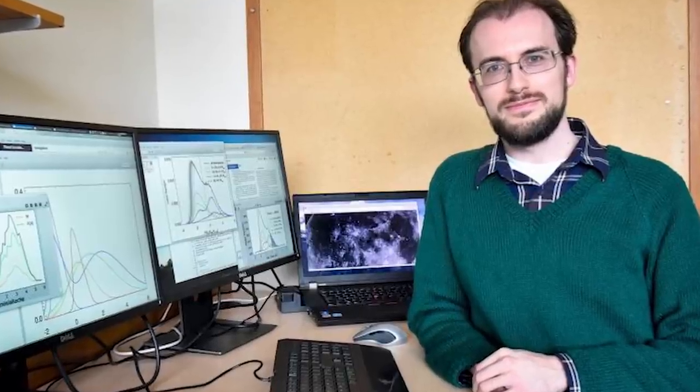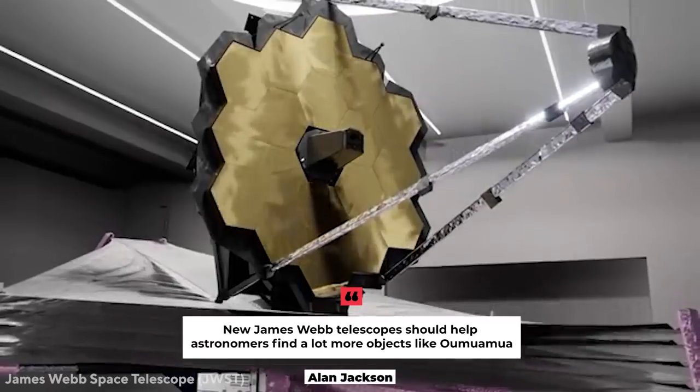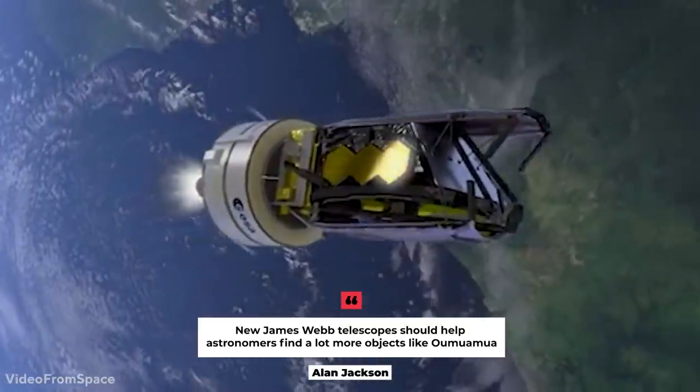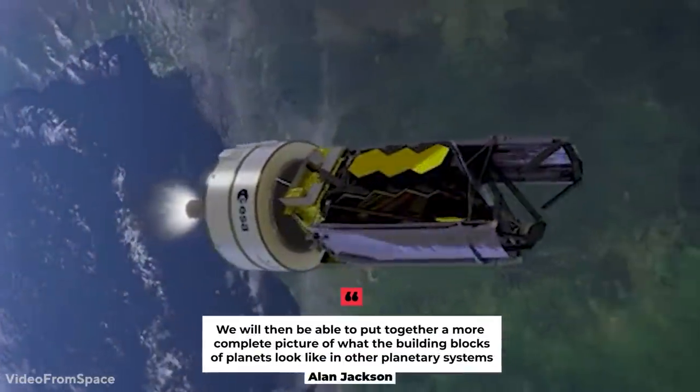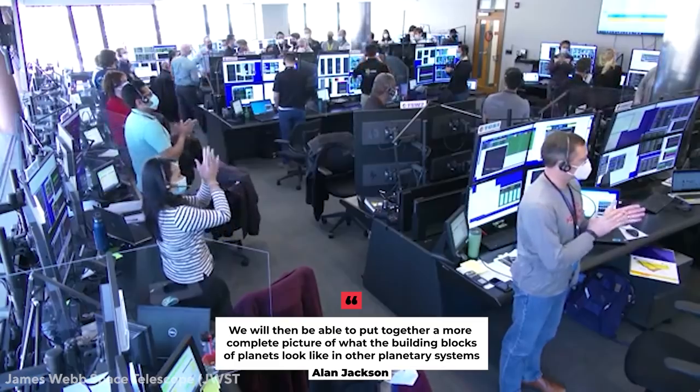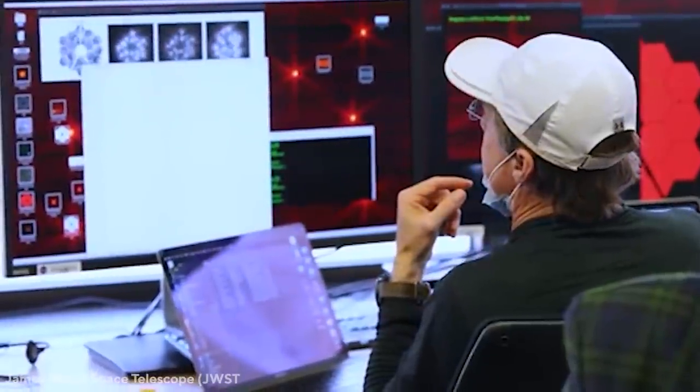Jackson conducted previous research on Oumuamua, but was not involved in the new study. Whatever its precise identity, Oumuamua might be just the first of many such interstellar visitors we'll encounter. Jackson said new James Webb telescopes should help astronomers find a lot more objects like Oumuamua, and we will then be able to put together a more complete picture of what the building blocks of planets look like in other planetary systems, which will also help us to understand how planets form.